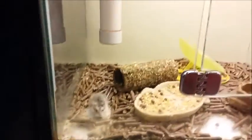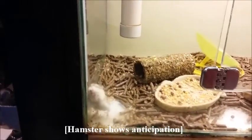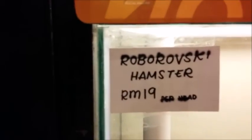We need a fast one. We need a fast and endurance one. A furious hamster. Yeah, we need a fast one. Look at him, he's already running. Okay, convenient. What's its name? Roborowski. Yes. That's a tiny hamster. Roborowski.